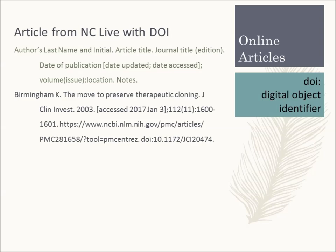Your sources are likely to be online articles. This sample shows how you'll cite articles found through NC Live, which is a suggested source for research because it has everything and is free to you. For all sources, you start with the author's last name and initials. For online articles, the next step is the title, then the journal title, which is usually abbreviated. If there is an edition, include that; if not, go on to the next element — date. The date for this is 2003. In brackets, you'll also need to include a date updated if there is one, or an accessed date. Remember to use the year, month, day format.